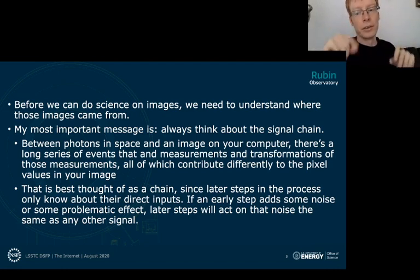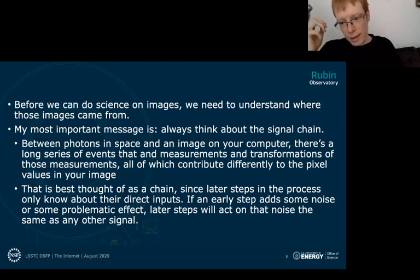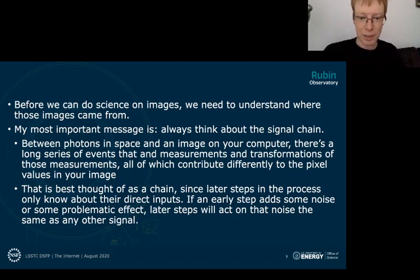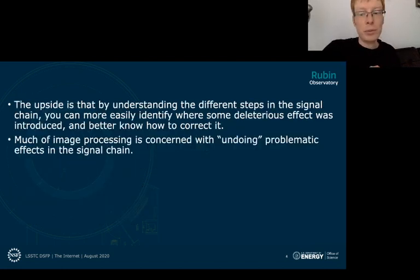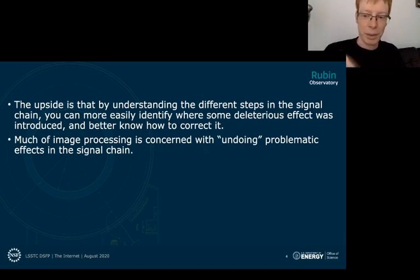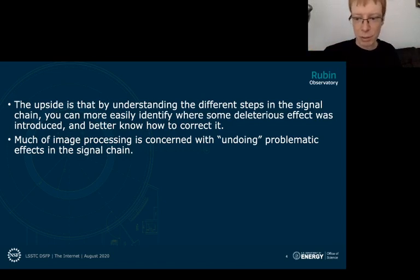Really understanding all the steps in this chain is the key to being able to process that data, calibrate that data, correct various deficiencies, and ultimately do science with it. I like to think of it as a chain because each step links to the next. A lot of what we do in image processing is essentially correcting for deficiencies or non-linearities in these processes. The better we understand how those processes work, the better we'll be able to bring our data back to a more idealized representation of what we see in the sky.